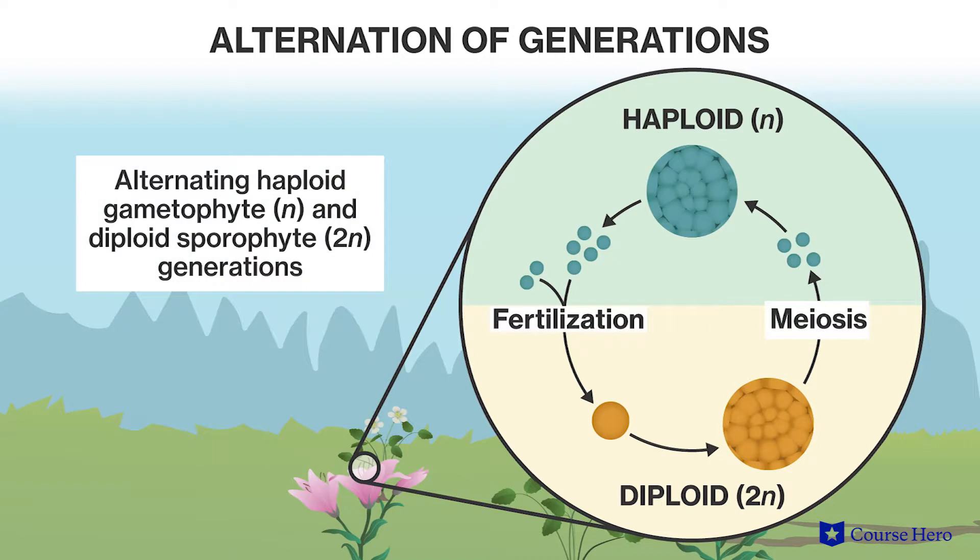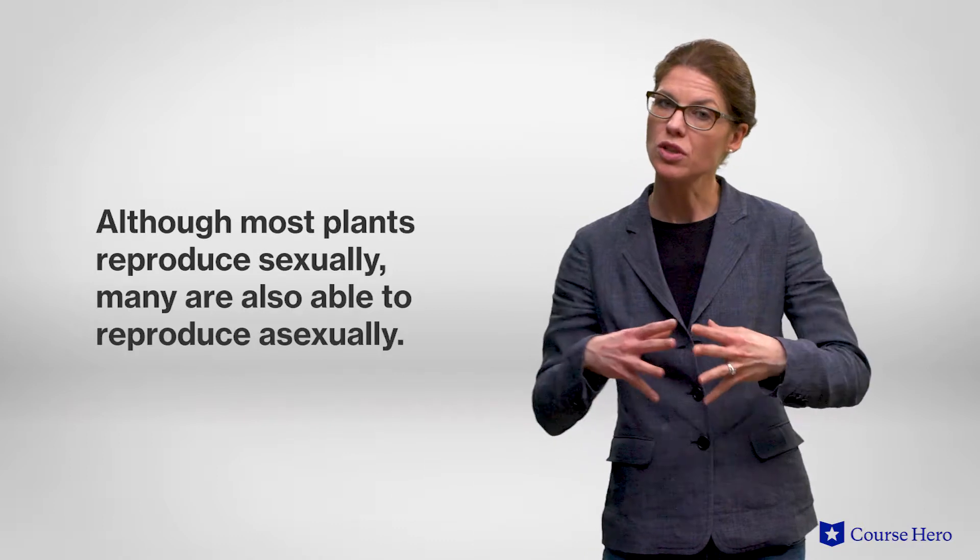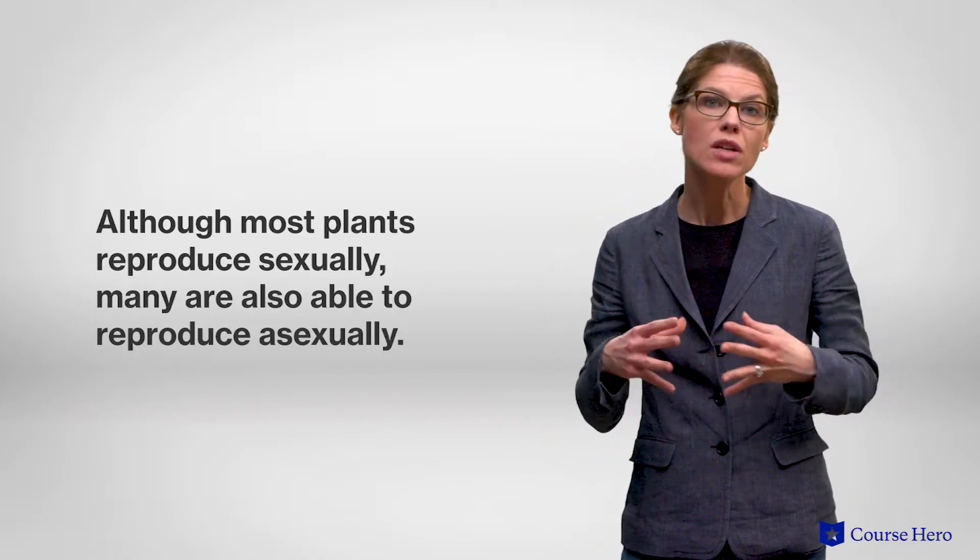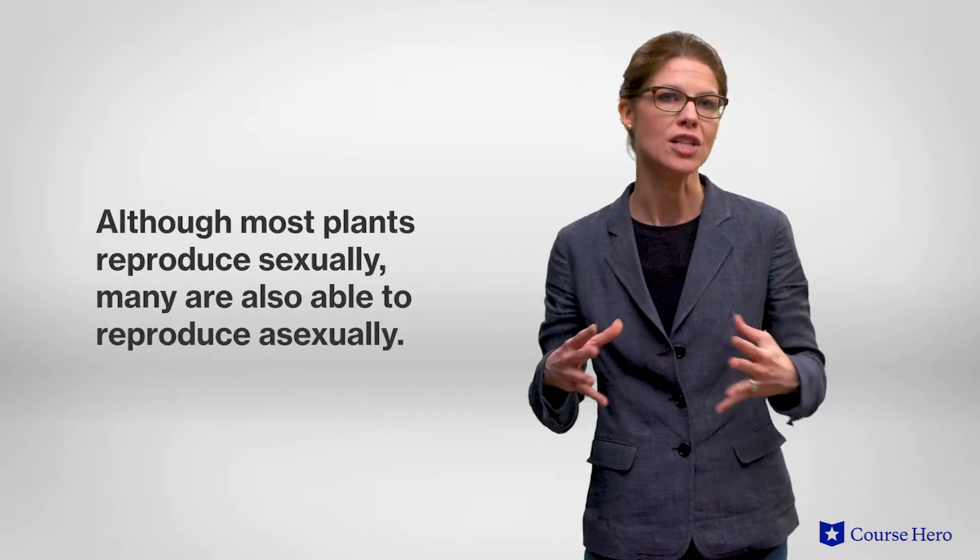Another major plant adaptation is their type of life cycle, known as alternation of generations, which includes both diploid and haploid reproductive stages. Land plants are most familiar in their diploid sporophyte stage. Although most plants reproduce sexually, many are also able to reproduce asexually.